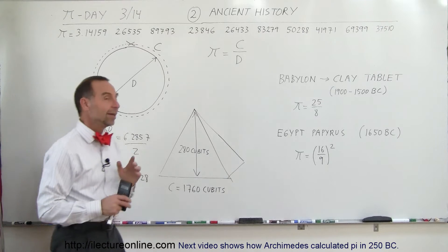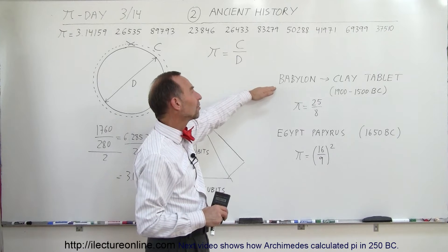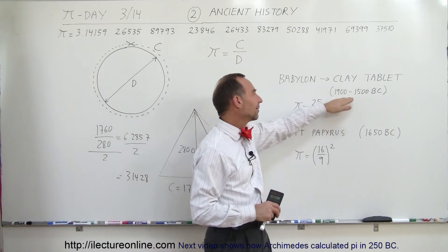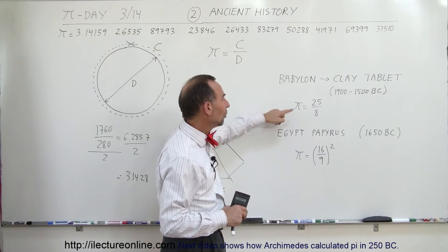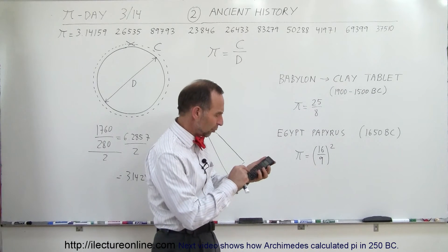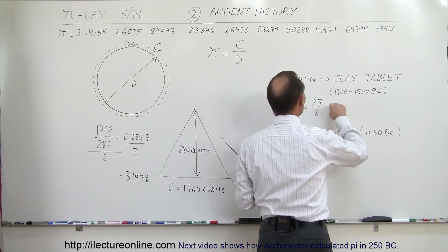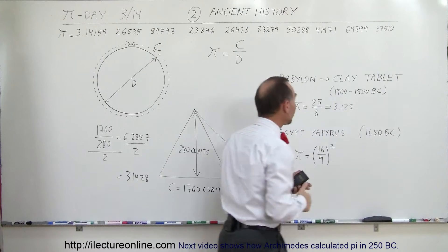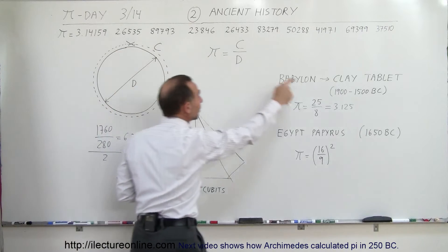The farthest we can go back in history is to a clay tablet that we found in Babylon, dated to about the 19th to 15th century before Christ. The ratio that they used there was 25 divided by 8. Let's see what that equals: 25 divided by 8 equals 3.125. That was the most accurate value we found in ancient Babylonia almost 4,000 years ago, and notice it's not that far off from the true value.